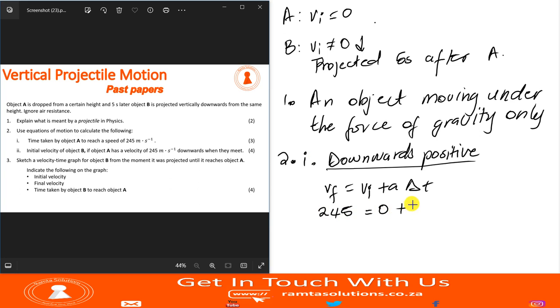So the gravitational acceleration constant is going to be positive 9.8 because we said downwards is positive. So what is our answer? 245 divided by 9.8 is delta T is 25 seconds.